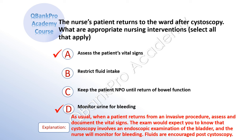The correct answer is A: assess the patient's vital signs. And D: monitor urine for bleeding. Explanation: As usual, when a patient returns from an invasive procedure, assess and document the vital signs. The exam would expect you to know that cystoscopy involves an endoscopic examination of the bladder, and the nurse will monitor for post-procedure bleeding. Fluids are encouraged post cystoscopy.